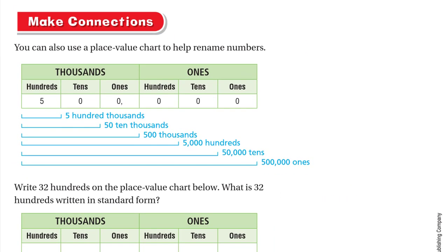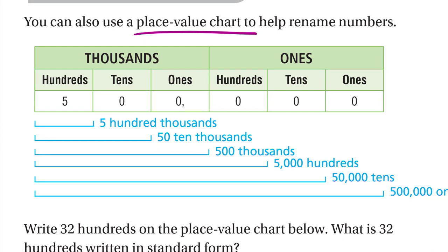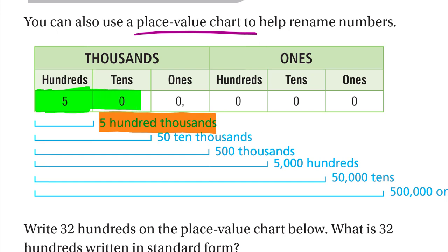Here is another way: you can use a place value chart to help rename numbers. We have 500,000. The five is at the hundred-thousands place, so we can say it's 5 hundred-thousands. If we take one more zero we're now at the ten-thousands place — in green it's 50 — so it's 50 ten-thousands. Taking one more zero, we're at thousands: 500 thousands.